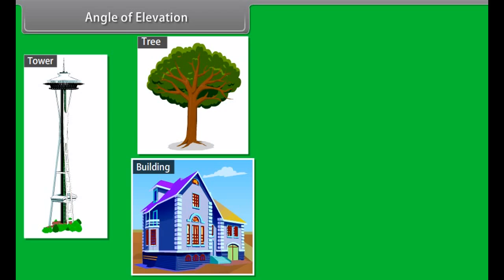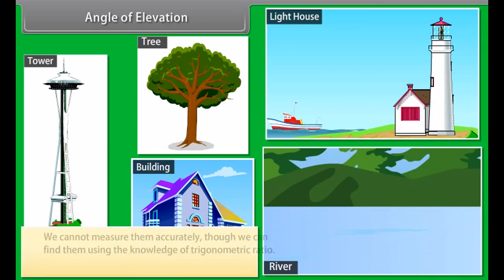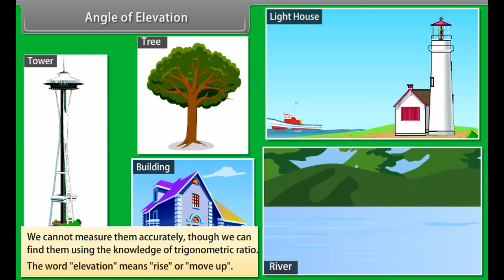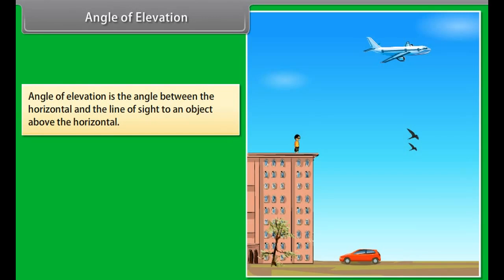Sometimes we are required to find the height of a tower, tree, or building, and distances of a ship from a lighthouse, width of a river, etc. We cannot measure them accurately, but we can find them using the knowledge of trigonometric ratios. The word elevation means rise or move up. The angle of elevation is the angle between the horizontal and the line of sight to an object above the horizontal.